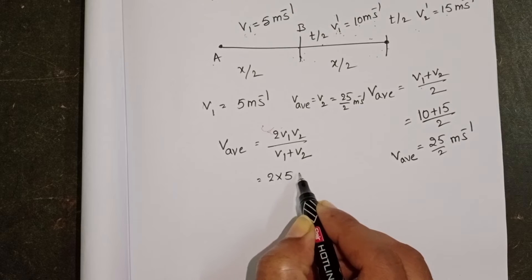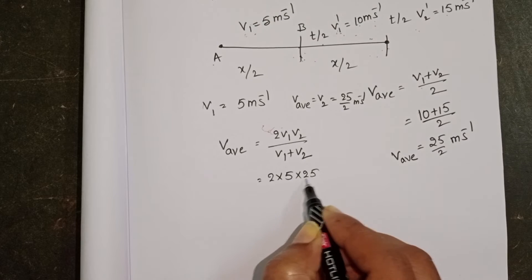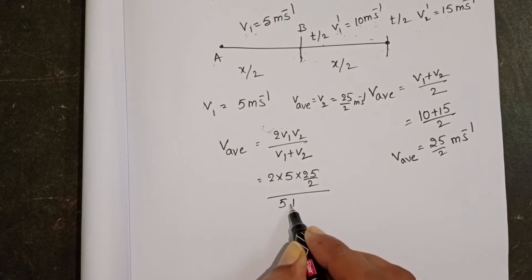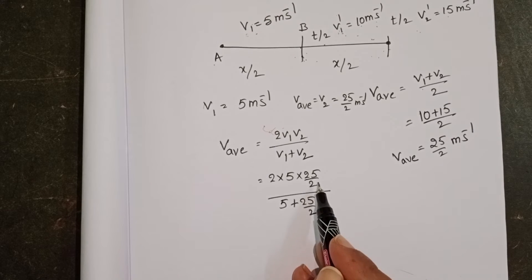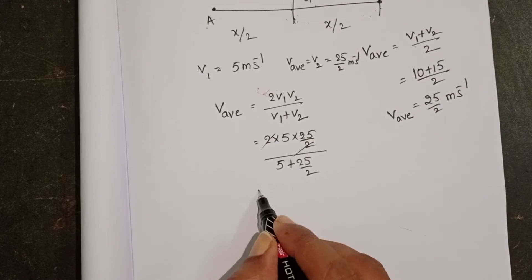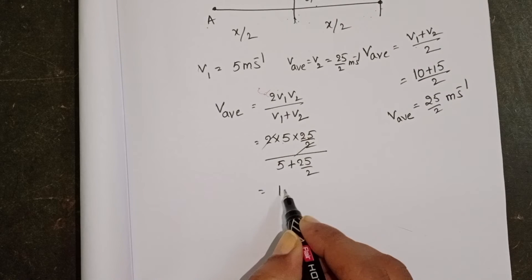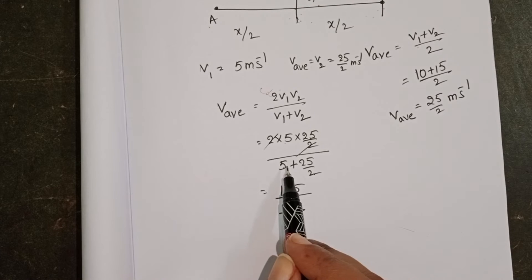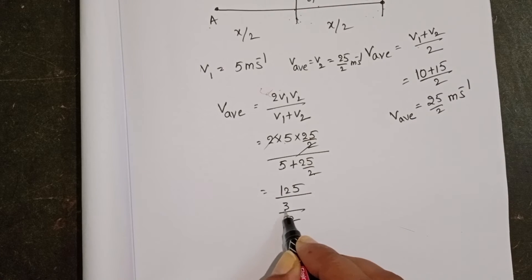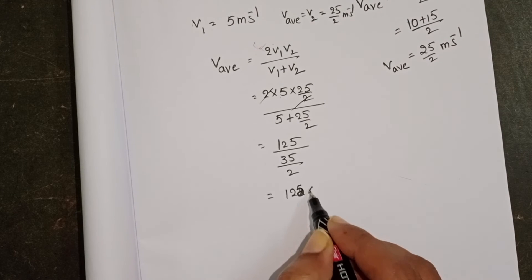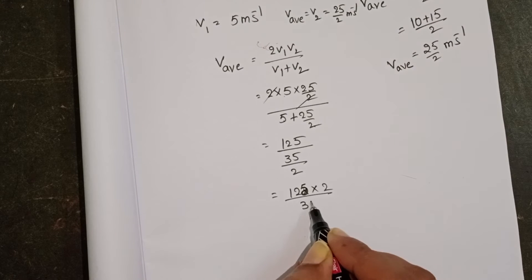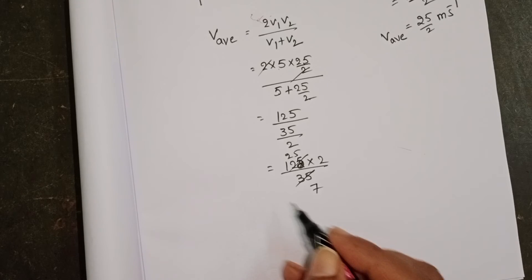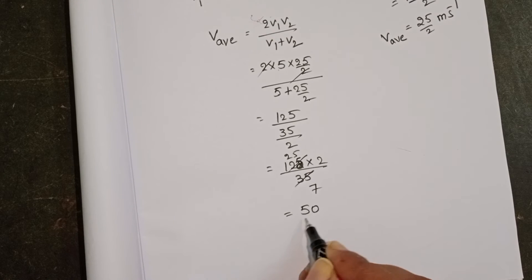Applying the formula: 2 into 5 into 25 by 2, divided by V1 plus V2, where V1 is 5 and V2 is 25 by 2. The 2s cancel out, giving 5 into 25 equals 125 in the numerator. For the denominator, LCM is 2, so 5 plus 25 by 2 gives 10 plus 25 equals 35. So the result is 125 into 2 by 35.